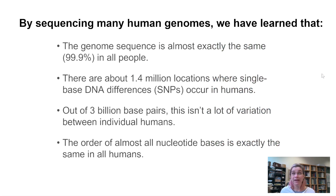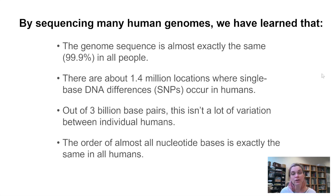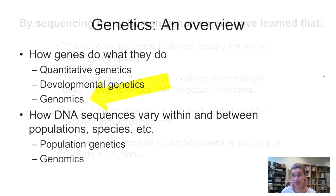By sequencing many human genomes, we have learned that the genome sequence is almost exactly the same — 99.9 percent — in all people. We've learned there are about 1.4 million locations where single base differences, what we call SNPs (single nucleotide differences), occur in humans. Out of 3 billion base pairs, there isn't a lot of variation between individual humans. We've also learned that the order of almost all nucleotide bases is exactly the same in all humans. We're going to come back to that a little bit later in this module.